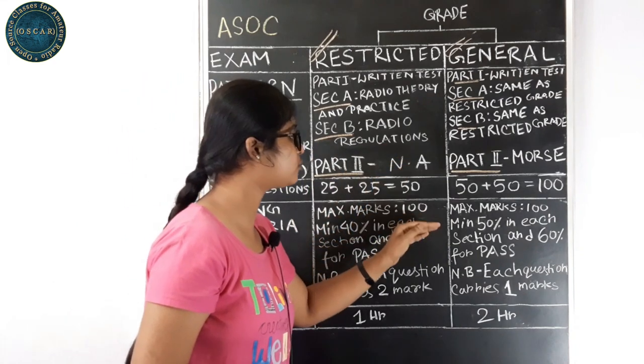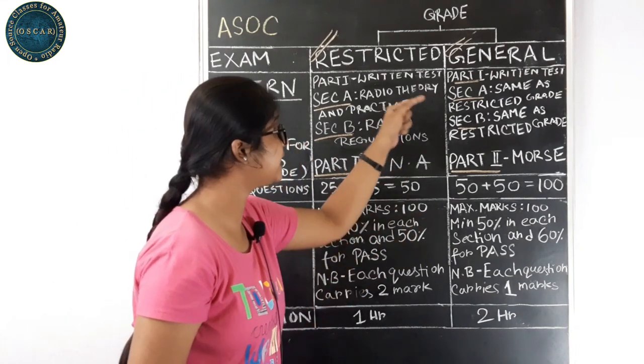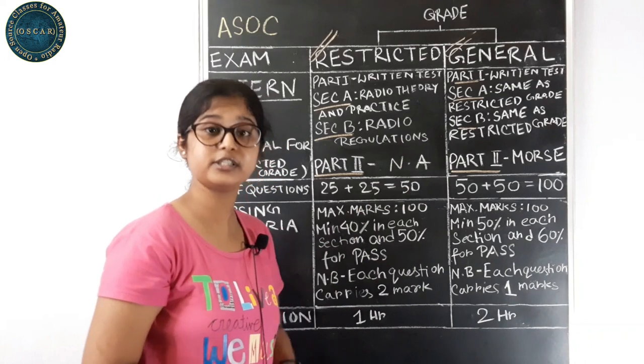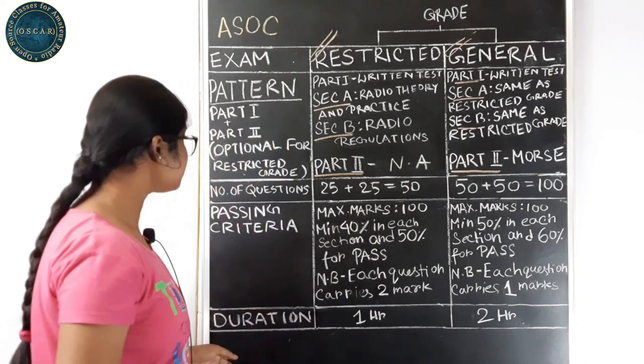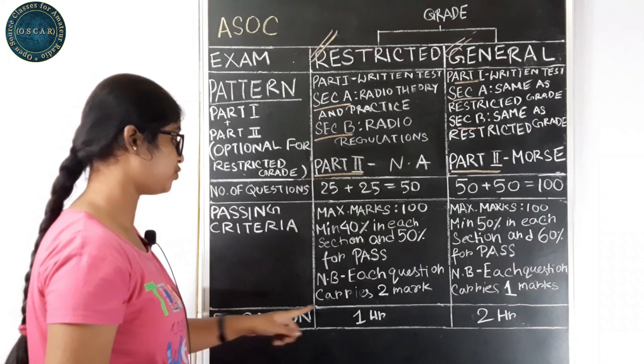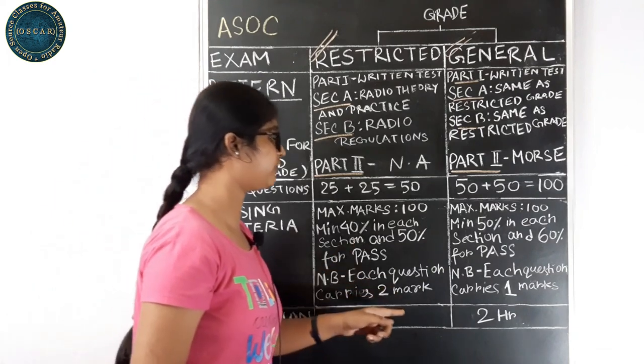And in General Grade, you have to score minimum 50% in each section and 60% overall to pass. The duration of the examination of Restricted Grade is 1 hour and for General Grade is 2 hours.